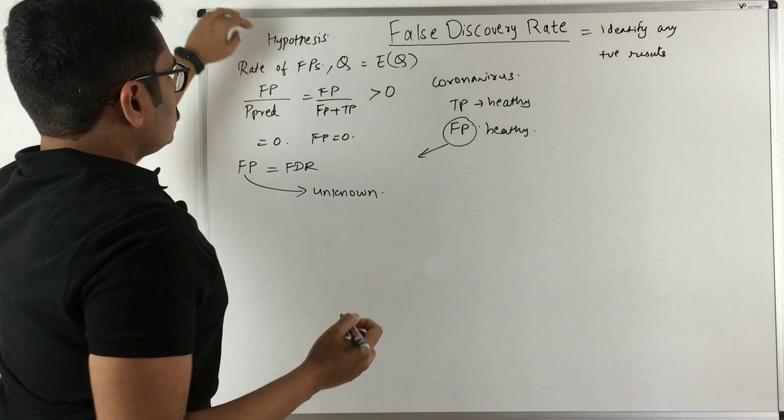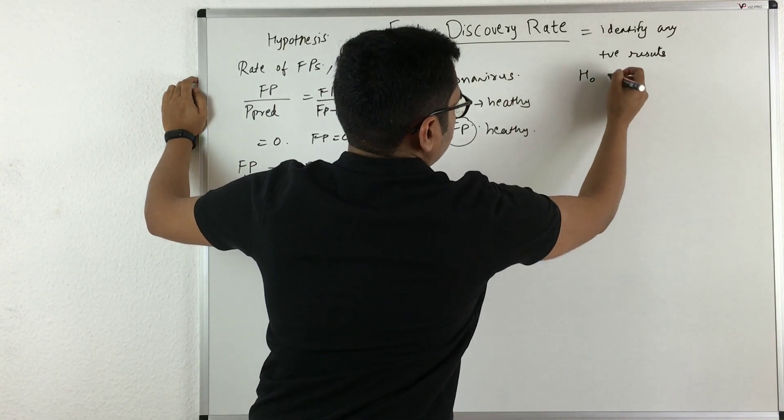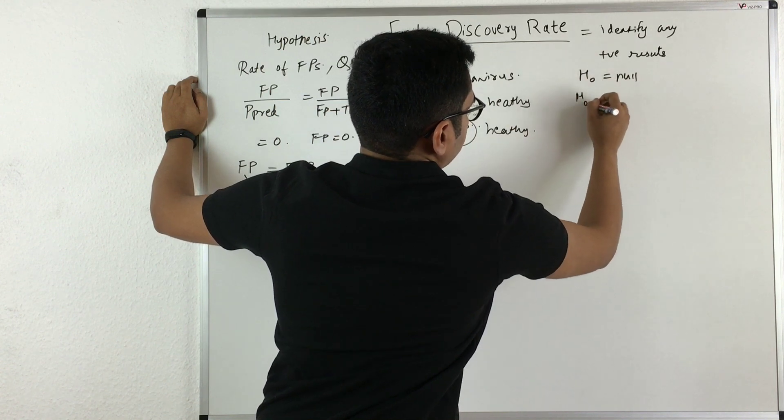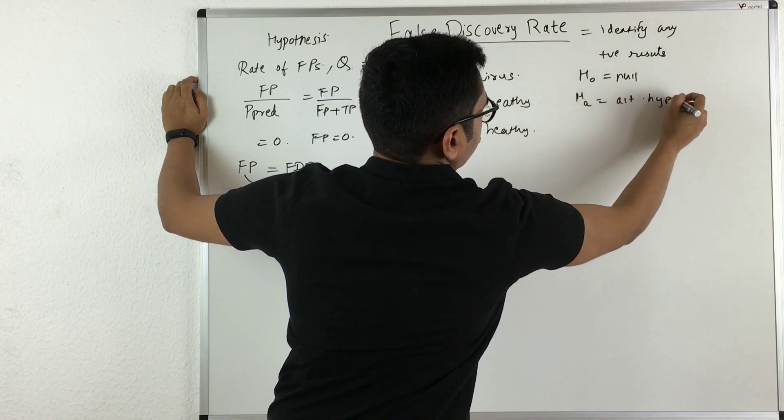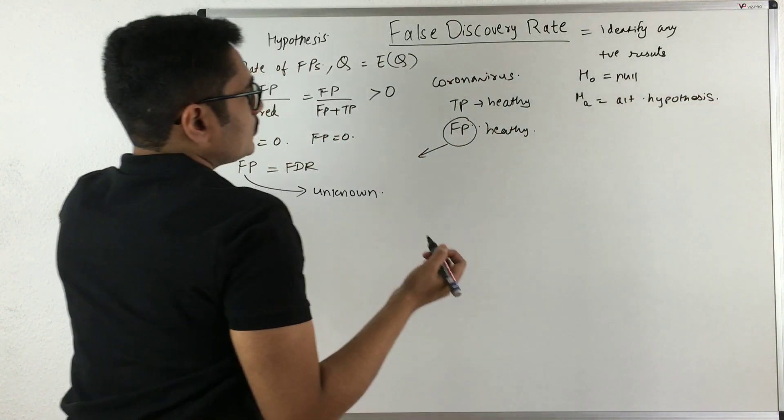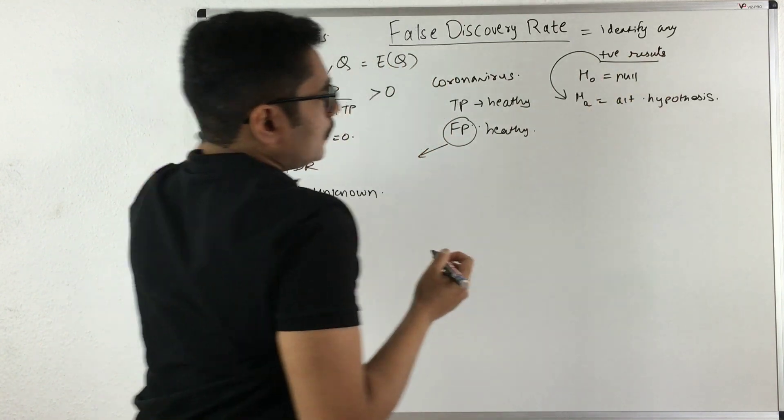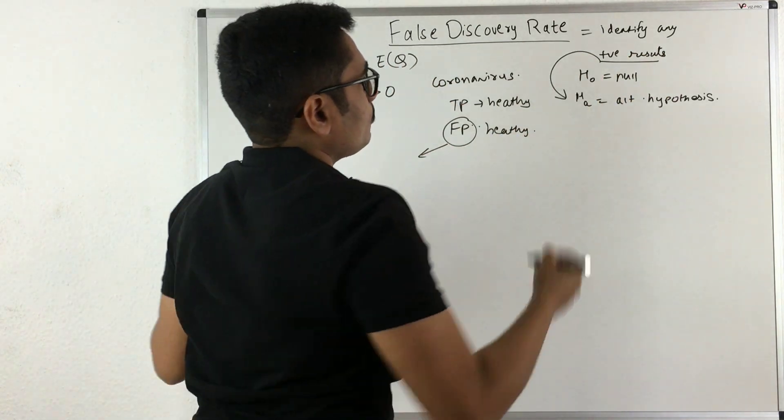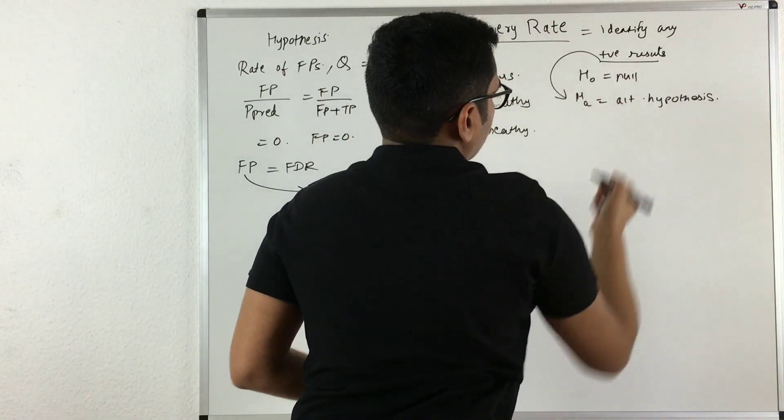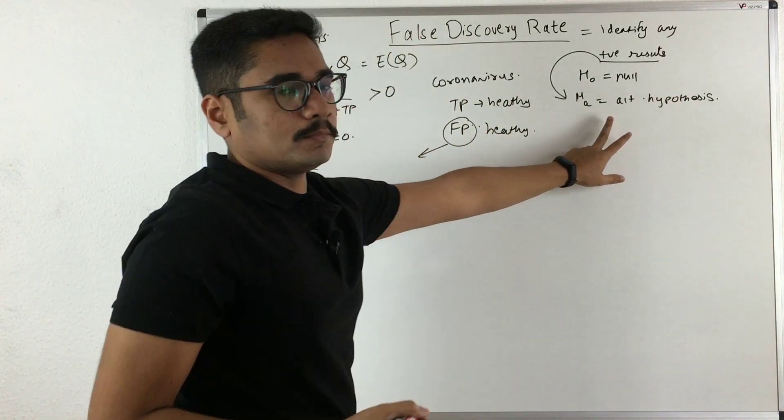Now since this is a hypothesis testing case, we have two hypotheses: null hypothesis H0 and alternate hypothesis Ha. False discovery rates are mainly used to identify positive results, those belonging to the alternative hypothesis. In this case, our null hypothesis is people suffering from coronavirus and alternative is people not suffering from coronavirus.